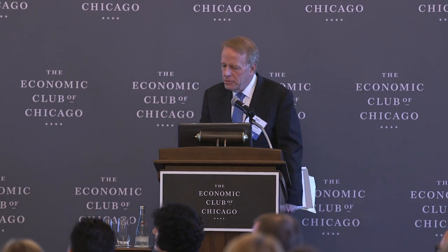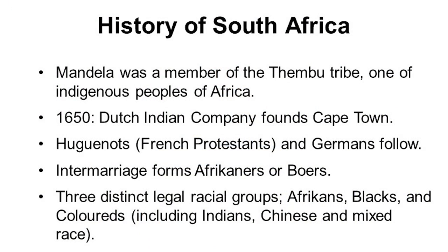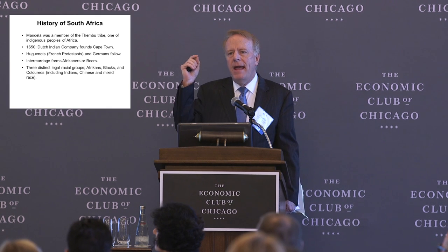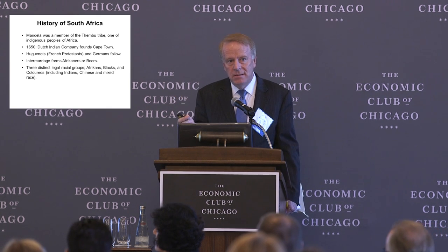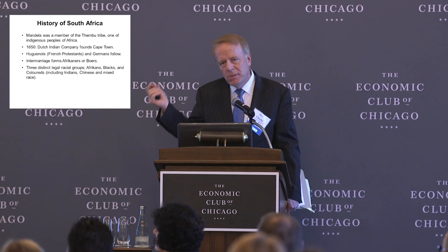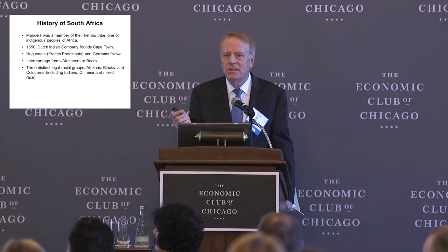Mandela was a member of the Thembu tribe. The Dutch Indian Company, which founded Cape Town, was soon followed by French Huguenots — the French Protestants fleeing Catholic France — and a number of Germans. There was intermarriage between these European groups, forming what today are called Afrikaners. This gets confusing because an Afrikaner is different from an Africanist. An Africanist is a black African who believes Africa should be ruled by black Africans. An Afrikaner is a white person of principally Dutch descent. Keep that straight because it will come back.